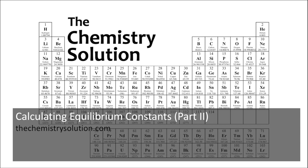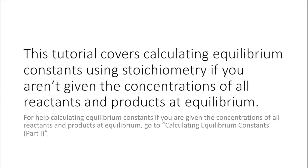Hello and welcome to The Chemistry Solution. This tutorial is called Calculating Equilibrium Constants Part 2. In Part 1 we used our equilibrium constant expression and the known concentrations of our reactants and products at equilibrium to calculate our equilibrium constant. Today we're going to take it one step further and look at how to calculate equilibrium constants if we're not given all concentrations at equilibrium, and how we can use stoichiometry to do that.